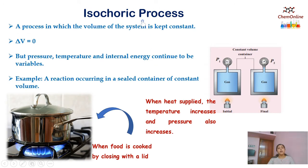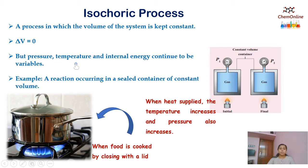The next type of process is isochoric process. A process in which the volume of the system is kept constant is called an isochoric process. Delta V equals 0, that is, change in volume is 0. Although the volume is constant, other variables like pressure, temperature, internal energy etc. will change in an isochoric process. We can achieve an isochoric process if a reaction is occurring in a sealed container of constant volume.